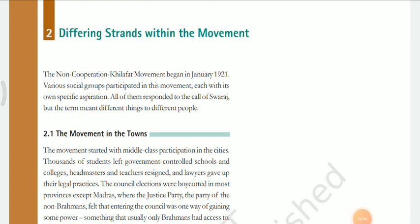Unit 2: Differing strands within the movement. The non-cooperation Khilafat movement began in January 1921. Various social groups participated in this movement, each with its own specific aspirations. All of them responded to the call of Swaraj, but the term meant different things to different people.